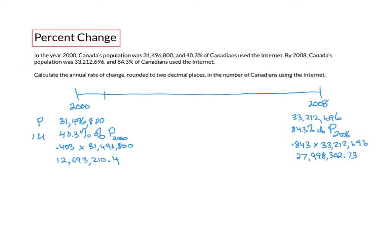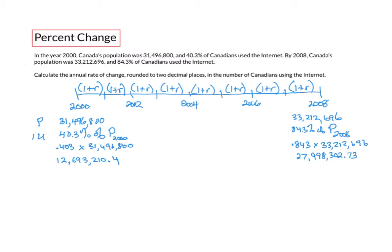We have intervals from 2000 through 2008. The question asks: what consistent percent change per time interval will bring internet users from 12 million 693 thousand in 2000 up to almost 28 million in 2008? Because the number increased, we assume the percent change was consistent and positive, represented by (1 + r), where r is the rate of change.